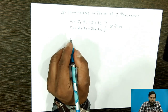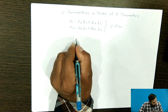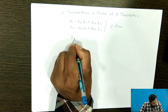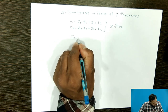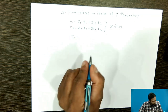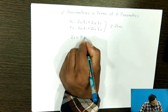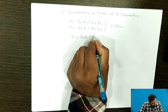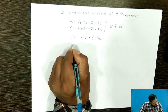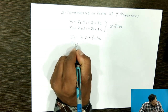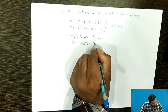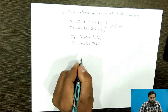Now we will write the equations for Y parameters. In the case of Y parameters, the dependent variables are currents I1 and I2, and the independent variables are V1 and V2. The equations are: I1 = Y11·V1 + Y12·V2, and I2 = Y21·V1 + Y22·V2.